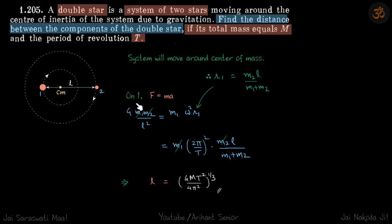Let's write our first equation, which is F equals MA. We can write it for any one of the particles, so let's write it for one. G M1 M2 by L square equals M into A. A is omega square into R1.